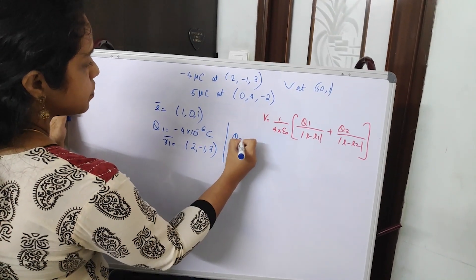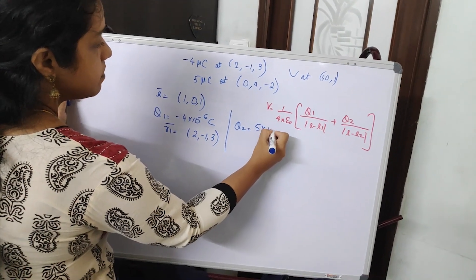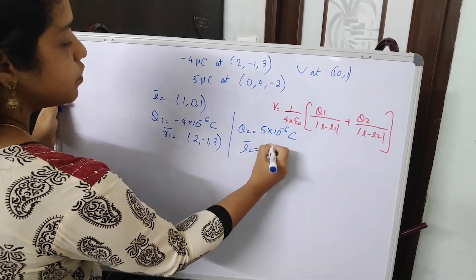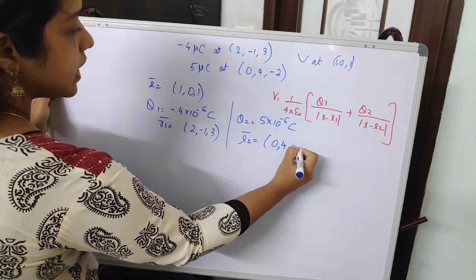Similarly, q2 that is 5 micro coulomb, that is 5 into 10 raised to minus 6 coulomb, and vector r2 will be 0, 4, minus 2.